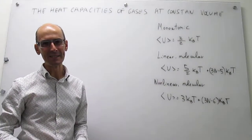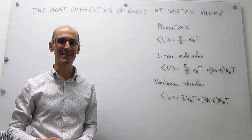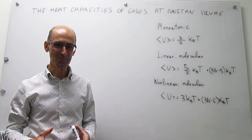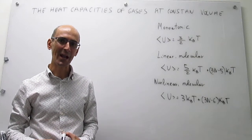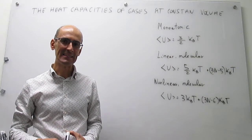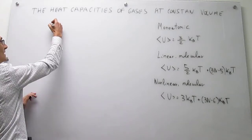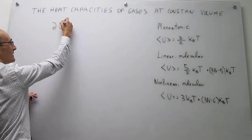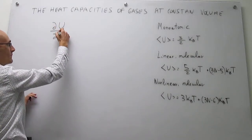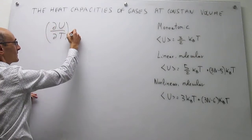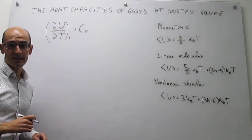In this video we discuss heat capacities of gases at constant volume. In a prior video we have seen how the internal energy depends on temperature, and we have seen that the way to express the dependence of the internal energy with temperature at constant volume is just the heat capacity at constant volume.